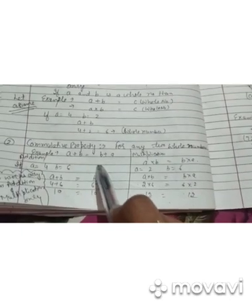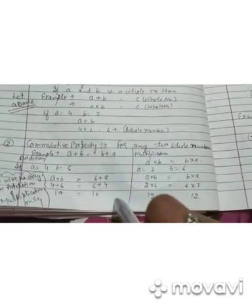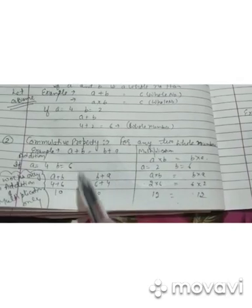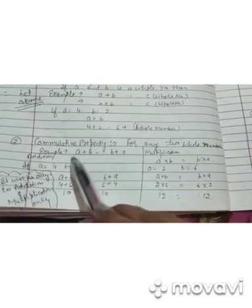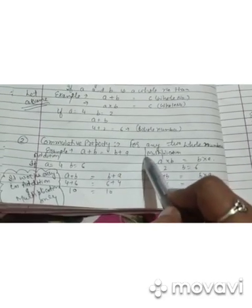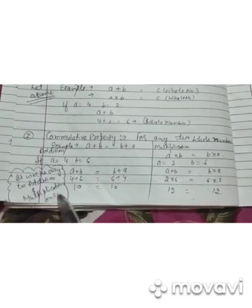Second property is commutative property for any 2 whole numbers. In addition: a + b = b + a. चाहे a को b से plus करें, चाहे b को a से, answer remains same. If a = 4 and b = 6, then 4 + 6 = 10 and 6 + 4 = 10. ऐसे ही multiplication में, a × b = b × a. If a = 2, b = 6: 2 × 6 = 12 and 6 × 2 = 12. This property works only in addition and multiplication.